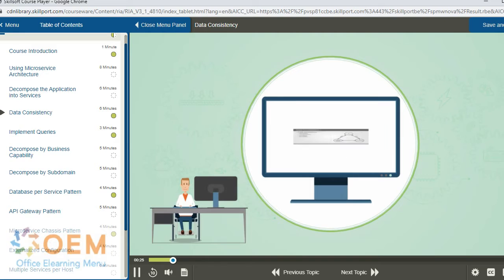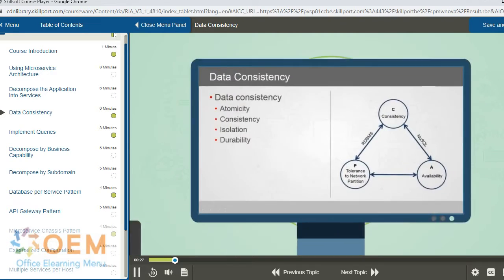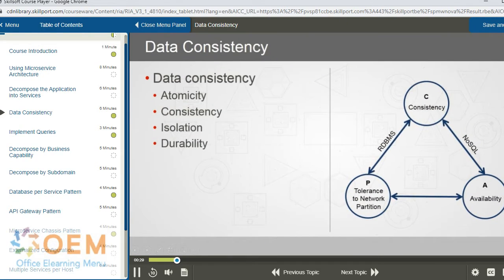Now in RDBMS, the data principles consist of atomicity, consistency, isolation, and durability that makes our transactional data more suitable for RDBMS. But in microservices, implementing these principles may be challenging.